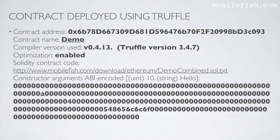I'm doing the same thing again — I've already deployed a contract using Truffle. This is the contract address. The contract name is Demo. The compiler version used is 0.4.13. I used Truffle version 3.4.7. The optimization was enabled. I have deployed the same contract as before and entered the same constructor argument values, so I'm using the same constructor arguments ABI encoded value. Let's copy this address.